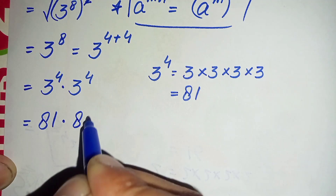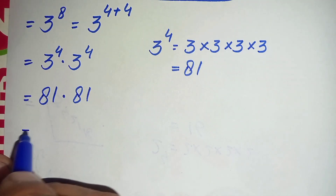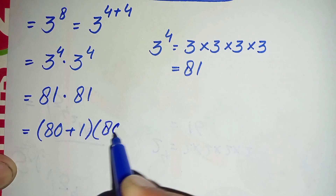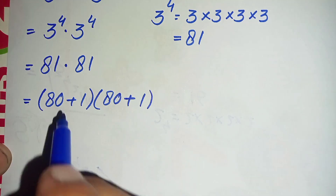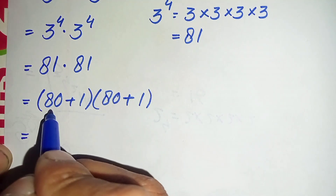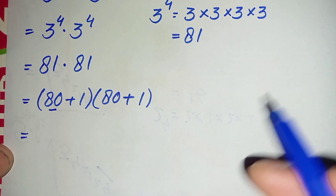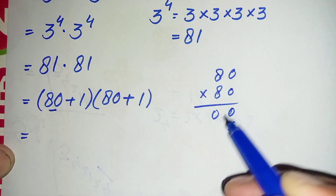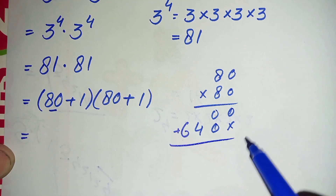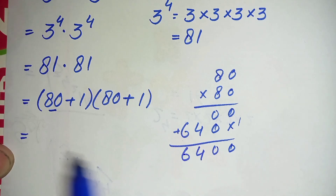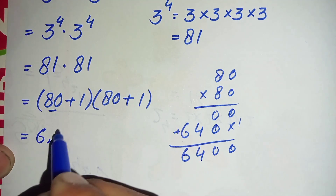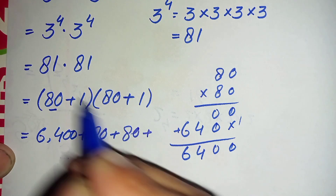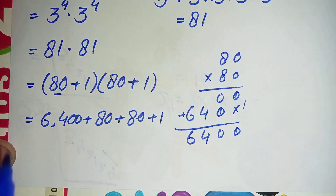Replacing 3 raised to power 4 with 81, this becomes 81 times 81. We write 81 as 80 plus 1 in both cases. Multiplying: 80 times 80 is 6400, 80 times 1 is 80, 1 times 80 is 80, and 1 times 1 is 1.